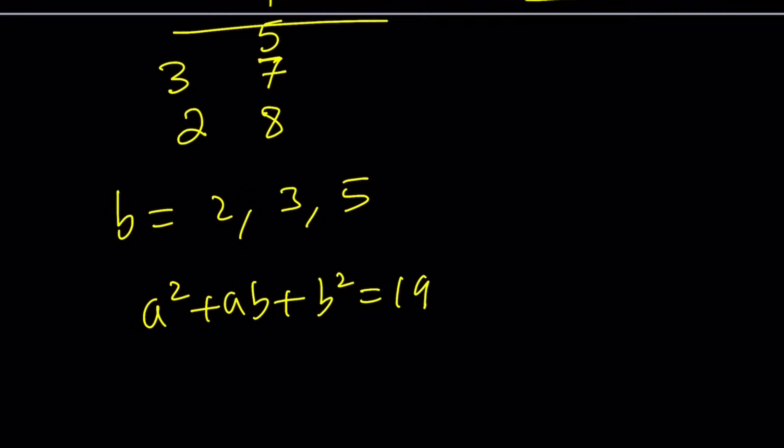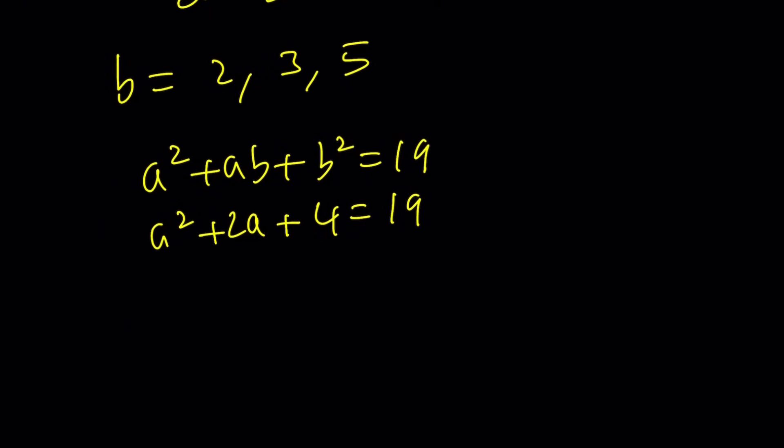If b is 2, you're going to get a squared plus 2a plus 4 is equal to 19. And then from here, you can try to solve for, I think that's going to be a minus 15, right? Minus 15 is going to be 0. And obviously, this is going to be 5 and negative 3. So it's going to be negative 5 and positive 3. Make sense? So negative 5 and positive 3 for these b values.